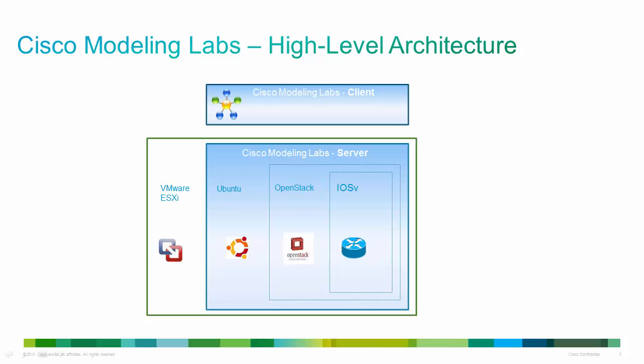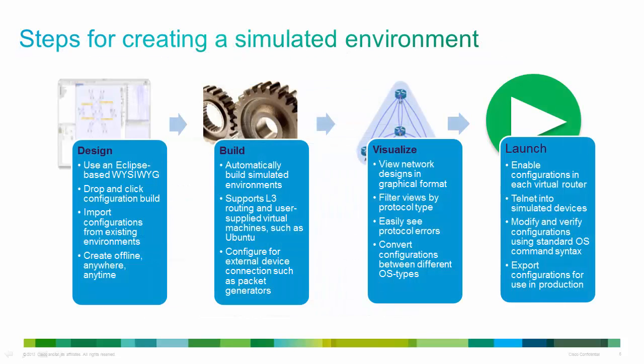A question we often get asked is: if everything is a virtual machine and you want to run 140 devices, won't that take up a lot of resources? In theory that's true, but in practice, under VMware, Ubuntu, and OpenStack, a number of efficiencies are in place — including memory efficiencies and page space reuse — that allow more virtual machines to run than you would typically expect. There is a calculator available that will show you how many virtual machines you can run under a given amount of memory.